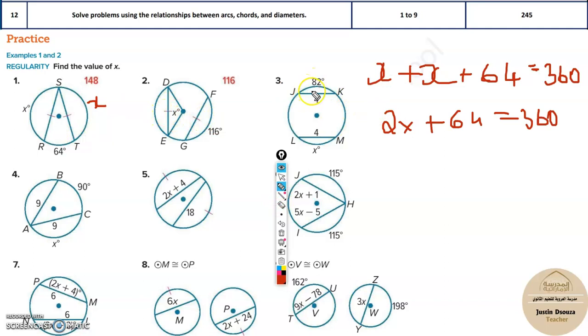Now similarly, sometimes they'll not give you the dash on the lines or the chords. Over here they are mentioned, this is 4 and this is 4. That means they're equal. So this is 82, then this must be 82.